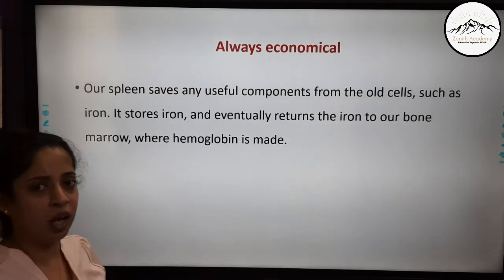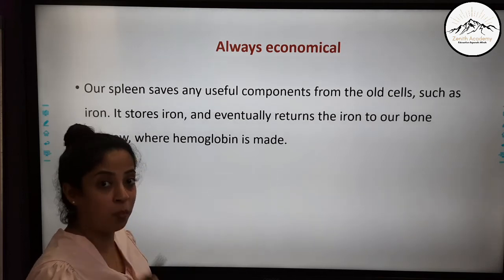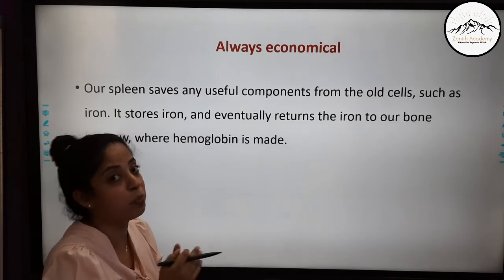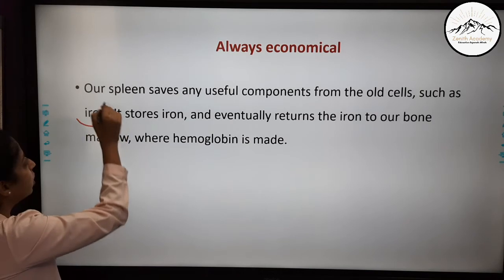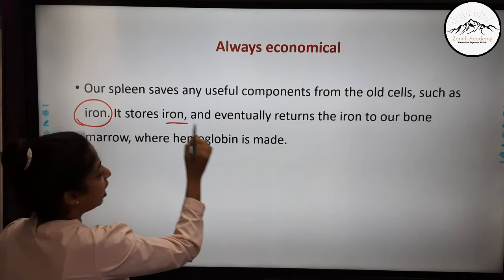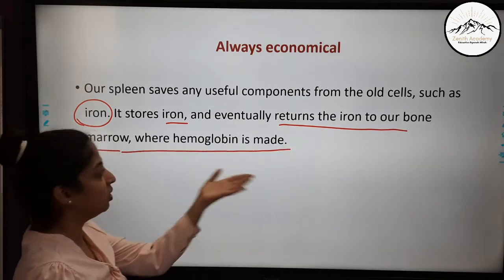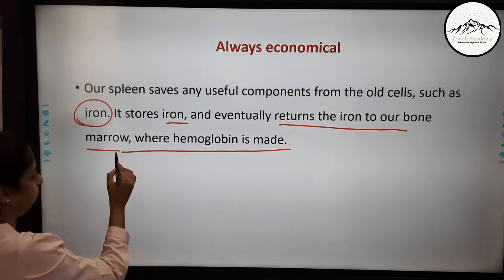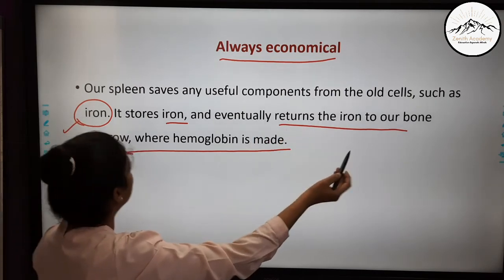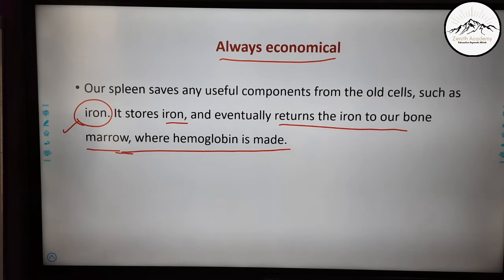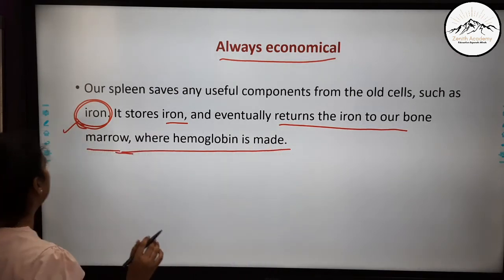The second function: the spleen is always economical. Our spleen saves any useful components from the old cells — it does not simply destroy them. It saves what is required and precious. For example, iron is stored. The spleen stores iron and eventually returns it to our bone marrow where hemoglobin is made. We have already read in previous videos how hemoglobin is made in the marrow using iron. So the spleen is very economical — it takes useful components like iron from old cells, stores them, and returns them to the bone marrow.